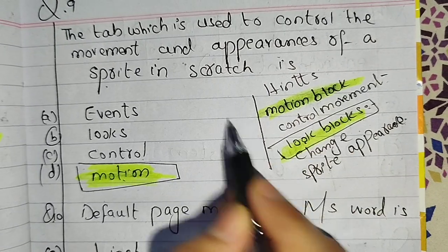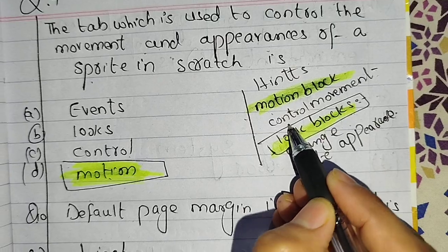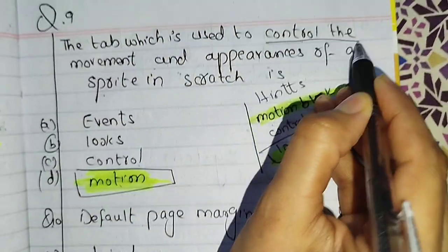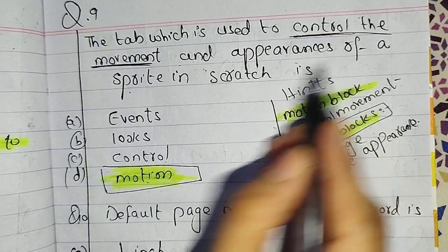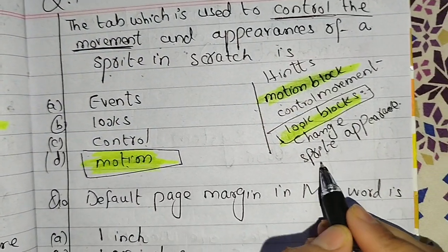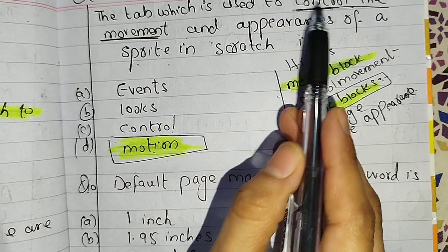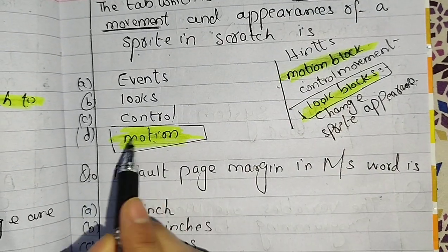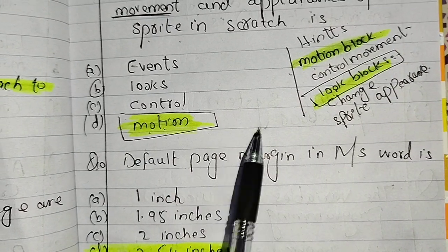Number nine MCQ: The tool that controls movement and appearance of the sprite. When appearance or change appearance, this looks blocked, but the one that controls movement should be motion.